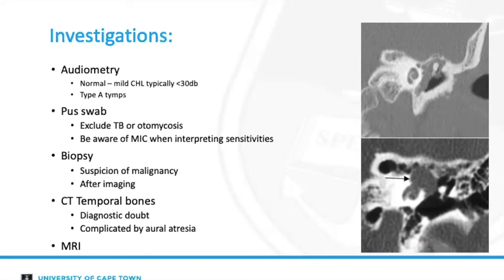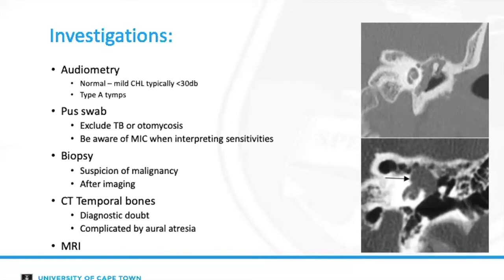Biopsy may be considered to exclude temporal bone malignancy or another invasive disease process, which should in most cases be done following imaging. A CT of the temporal bones is not routine; however, it may be indicated where granular myringitis is complicated by canal stenosis or atresia, or where there is diagnostic doubt to exclude conditions like cholesteatoma — where one might see erosion of the scutum, ossicular erosion, expansion of the aditus ad antrum, or a sclerotic mastoid. In granular myringitis the CT should be relatively normal apart from minor thickening of the tympanic membrane.